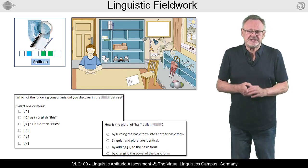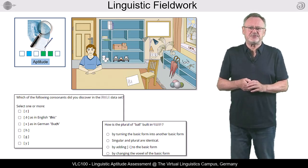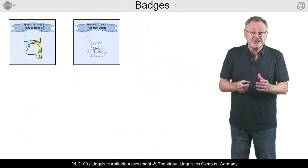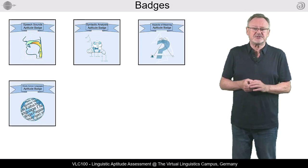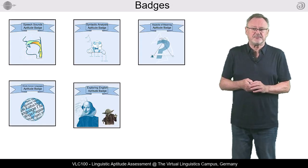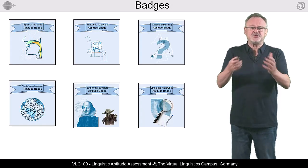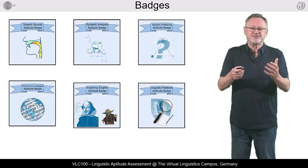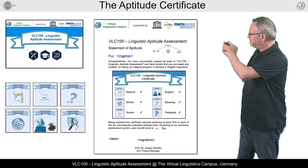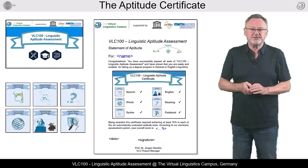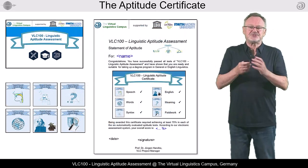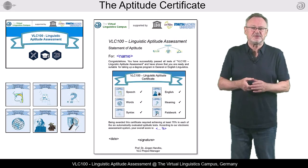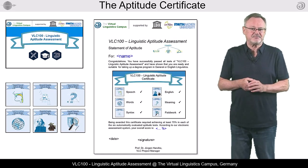For each of these six test scenarios, you will be awarded a badge if 70% of your answers are correct. And once you have earned your six badges, you will receive the aptitude statement, which certifies that you are suitable for a linguistic degree program.